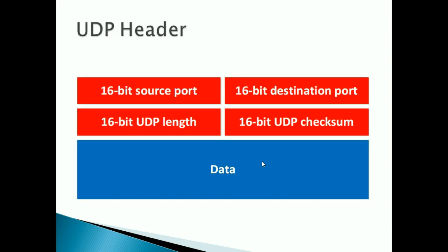Looking at the UDP frame format and header: it contains the data being sent, a source and destination port number indicating where the data is transmitting from and to, a UDP length field showing the size of the data, and a checksum field for error checking. It's a very simple UDP header.